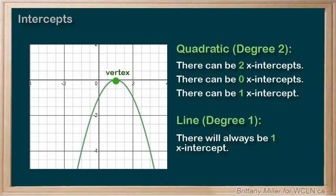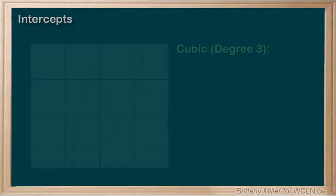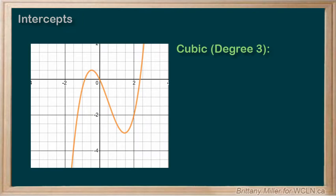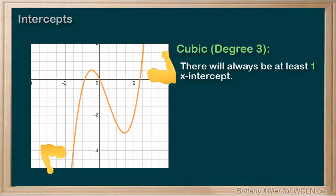What about a cubic function? A cubic function has an odd degree, which means its arms are pointing in different directions. That means it has to cross the x-axis at least once.